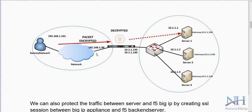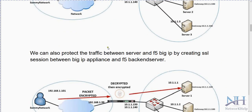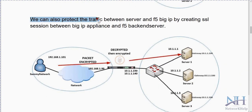When traffic comes from the user to the backend node, it arrives at F5 encrypted. Because we are using an SSL profile on F5, F5 will decrypt the traffic and forward it to the backend node. So we are using an SSL profile between client and F5.